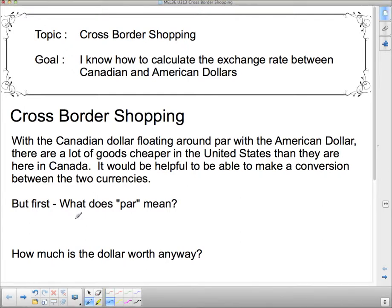Well, par is short for parity. And if two currencies are on parity, that means that two currencies are worth the same amount. Currencies are worth equal amounts. If the Canadian dollar were on par with the American dollar, one Canadian dollar, CAD, would equal one US dollar, USD.